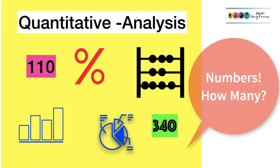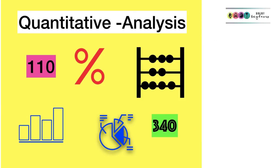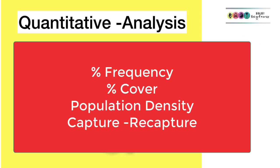Next is quantitative analysis, which is basically dealing with numbers. It gives us an indication of the numbers of particular organisms present in the ecosystem, and there are various ways of doing this which we'll go into each one of them separately.